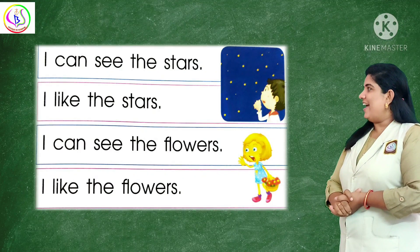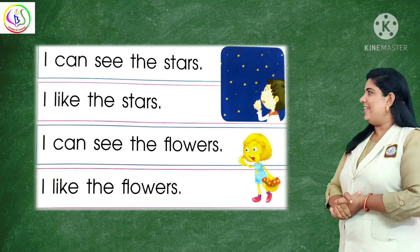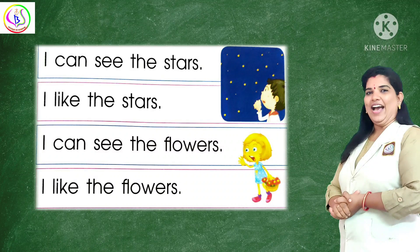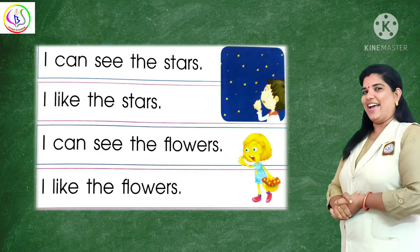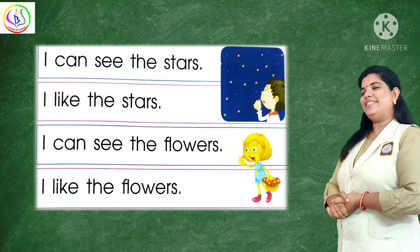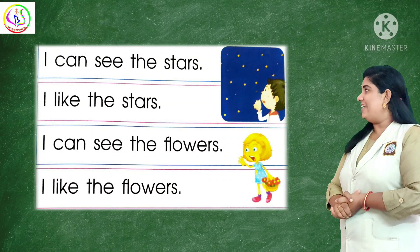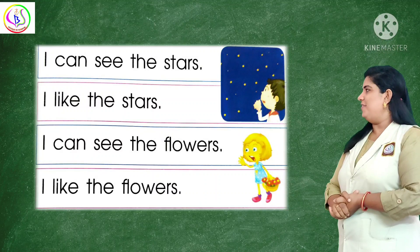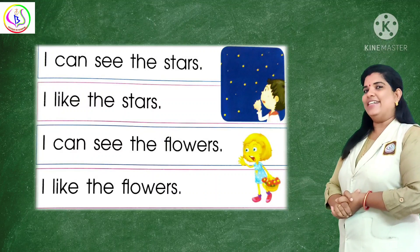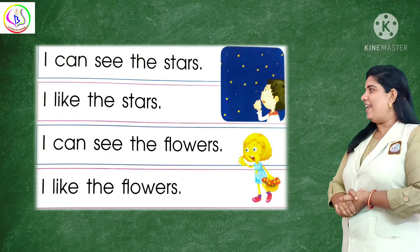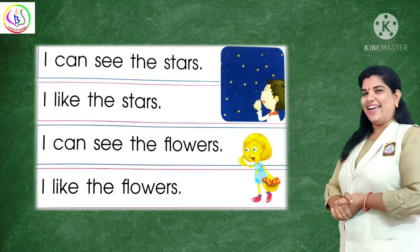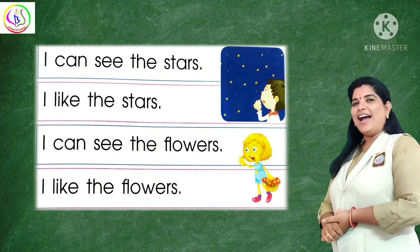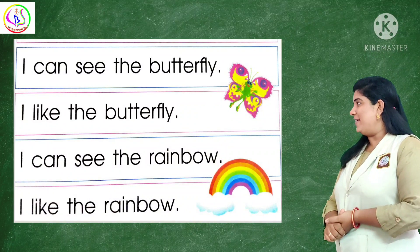The next one: I can see the stars. I can see the stars. I like the stars. I like the stars. I can see the flowers. I can see the flowers. I like the flowers.